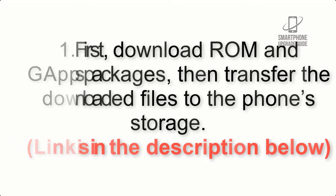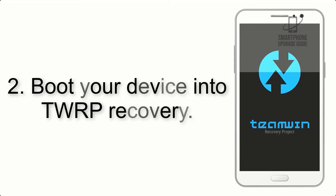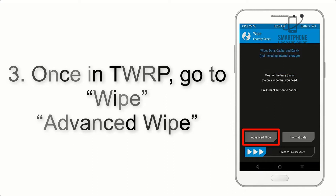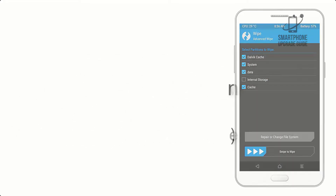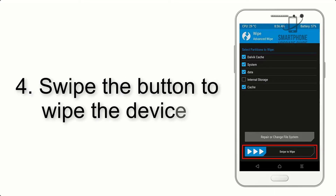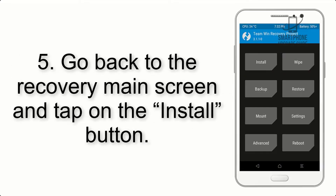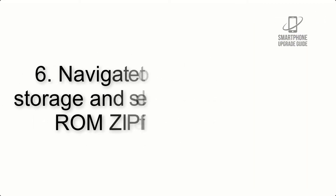Step 2: Boot your device into TWRP recovery. Once in TWRP, click on Wipe, then Advanced Wipe, and select the checkboxes as shown in the image, excluding internal storage. Step 4: Swipe the button to wipe the device. Step 5: Go back to the recovery main screen and tap on the Install button.